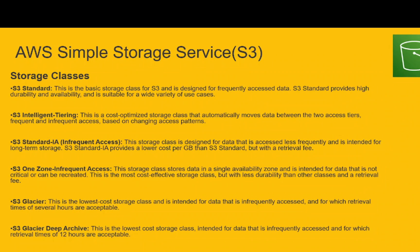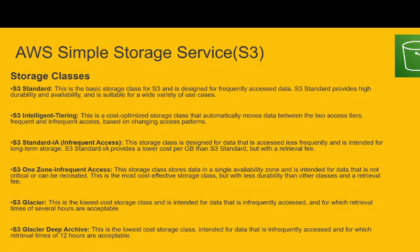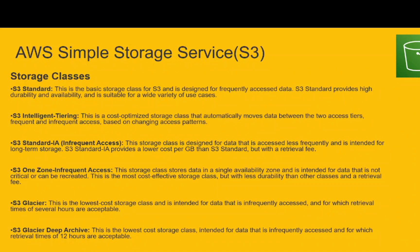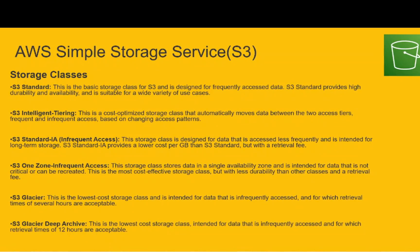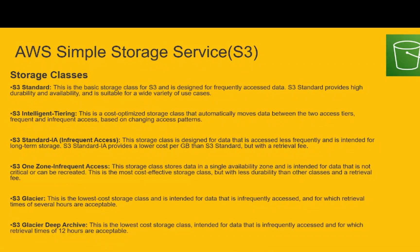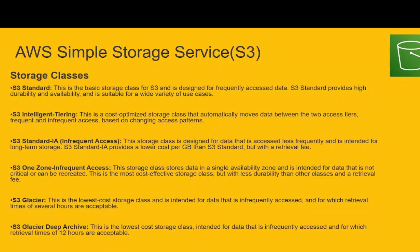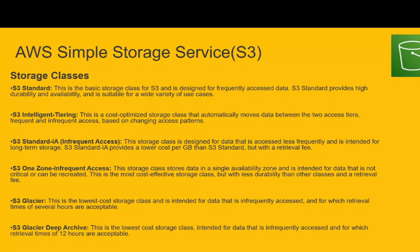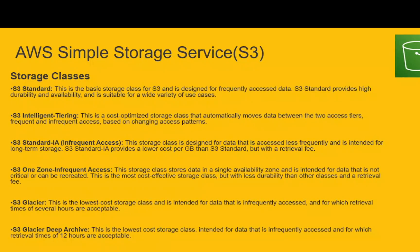S3 Glacier is a very low-cost storage class intended for data that is infrequently accessed and for which retrieval times of several hours are acceptable. S3 Glacier Deep Archive is the lowest cost storage class, intended for data that is infrequently accessed and for which retrieval times of 12 hours are acceptable.